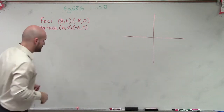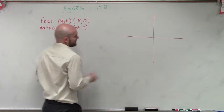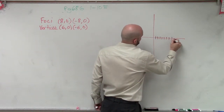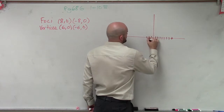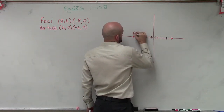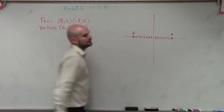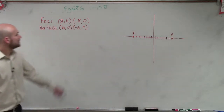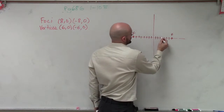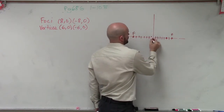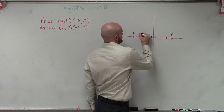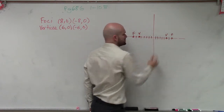So we're given foci at (8, 0) and (−8, 0) — counting out to 8 on each side. There are our two foci. Then they say our vertices are at (6, 0) and (−6, 0) — counting out to 6 on each side. There are our two vertices.